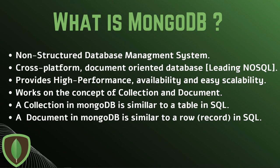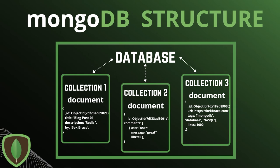A database in MongoDB is a container for collections. You can have one main database with multiple collections, each containing one or multiple documents. A collection is a group of MongoDB documents — equivalent to a table in a relational database — and it exists within a single database. Collections do not enforce a schema; it's basically schemeless, so you don't have to design it ahead of time like in SQL where you need to define rows, columns, primary keys, and foreign keys.